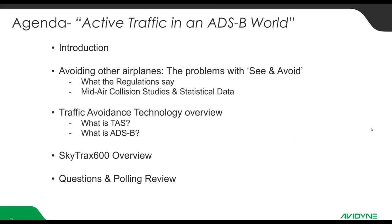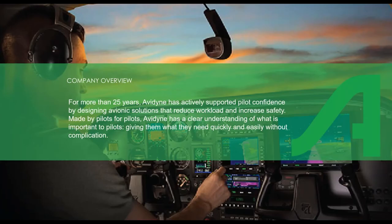Here's what we're going to do today: I'll do a quick introduction, then we'll jump in and talk about the problems with see and avoid. We'll see what the regulations have to say and what some of the statistics say. We'll talk about different traffic avoidance technology, including TCAS-2, TCAS-1, TAS, and ADS-B, and then we'll have a quick review of SkyTrack 600.